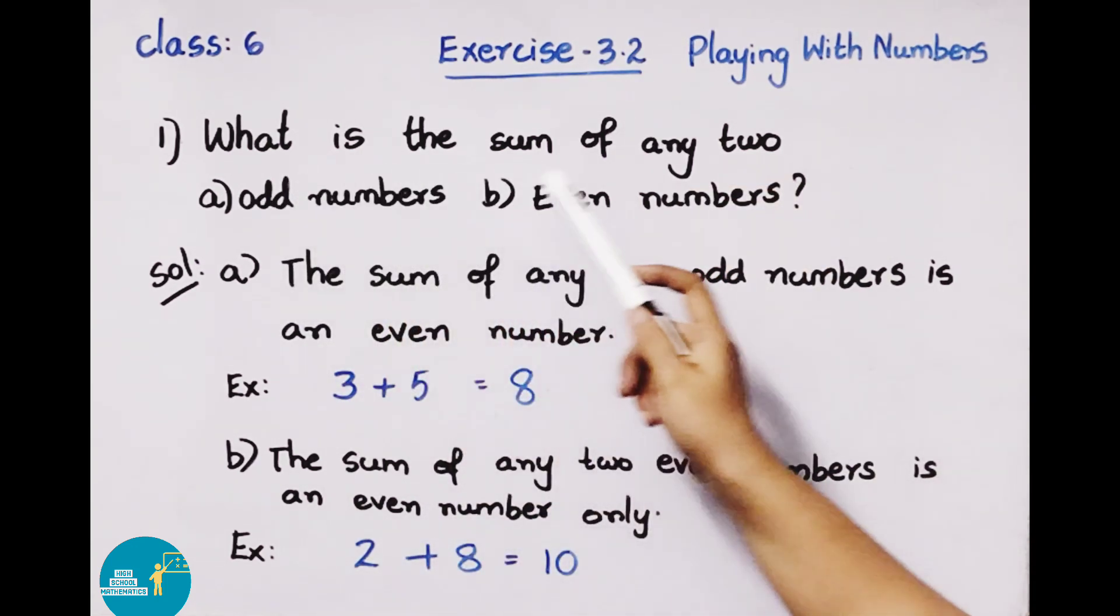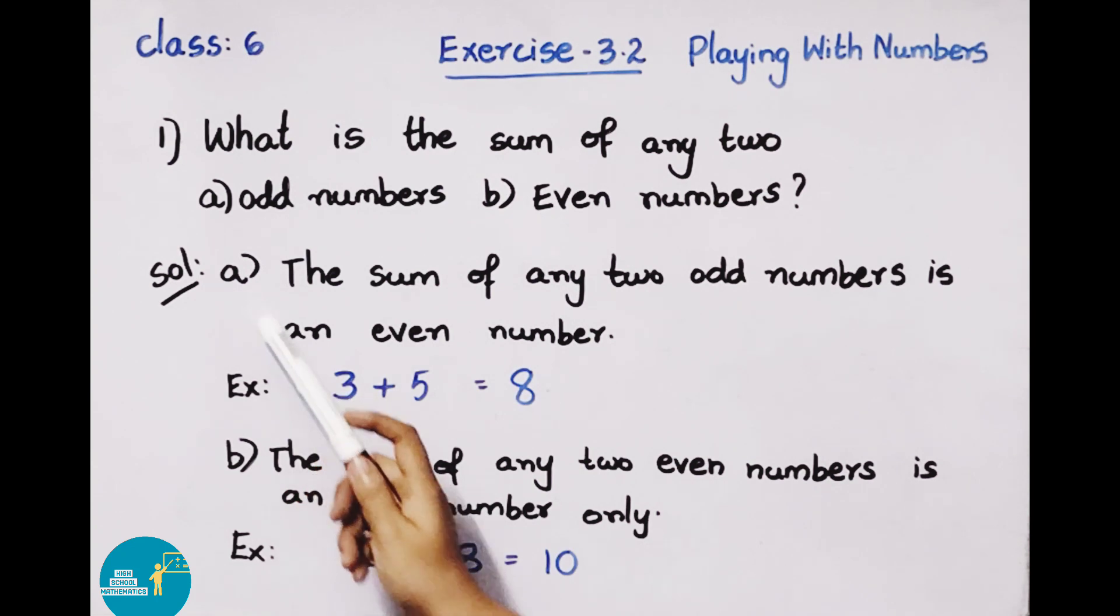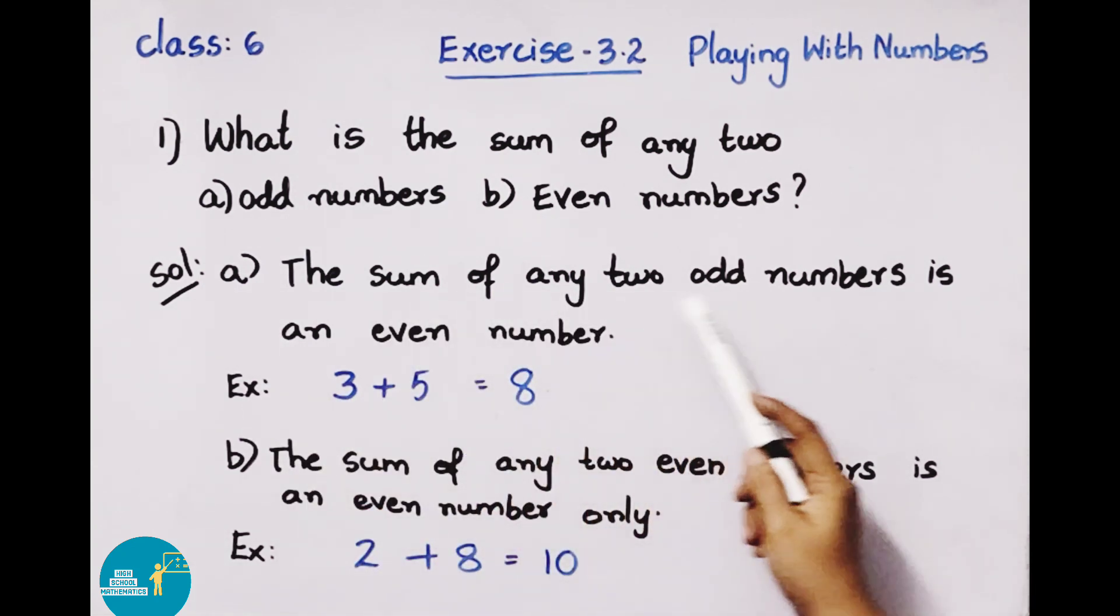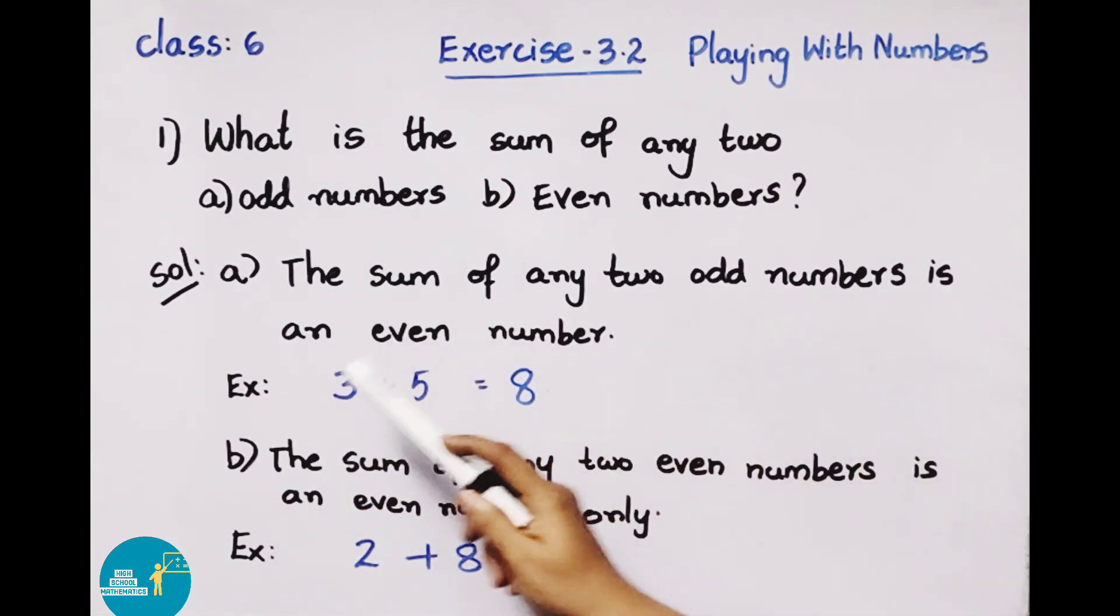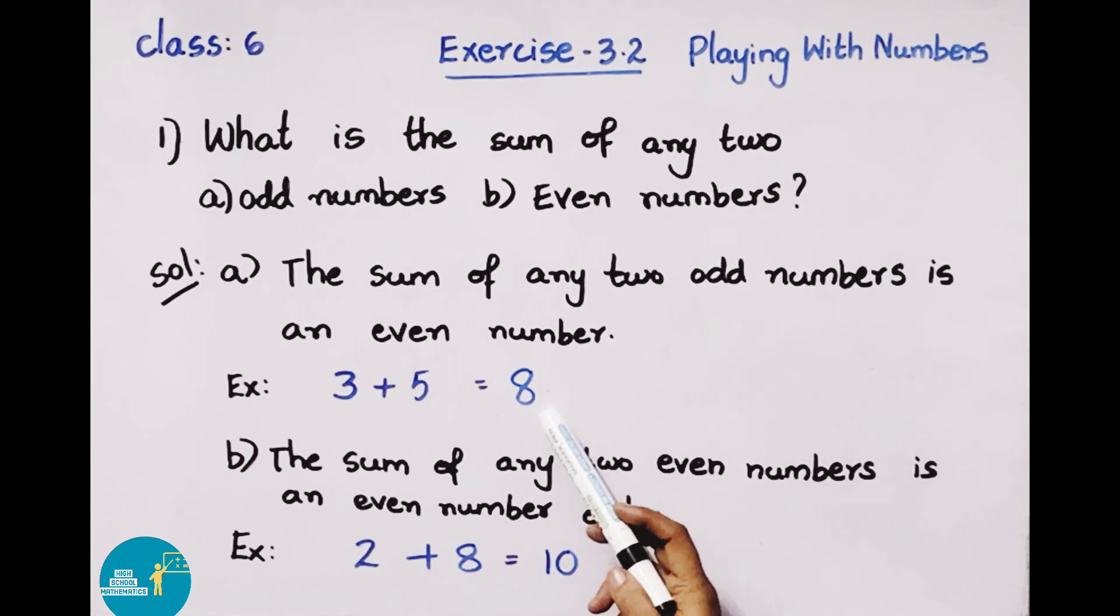First question: What is the sum of any two odd numbers and even numbers? Solution: The sum of any two odd numbers is an even number. For example, two odd numbers 3 plus 5, when added, gives 8, which is an even number.